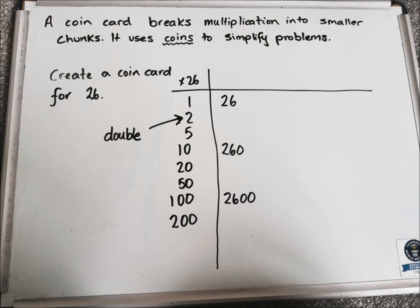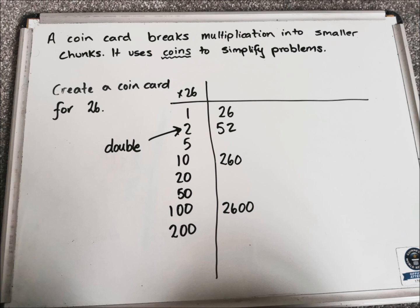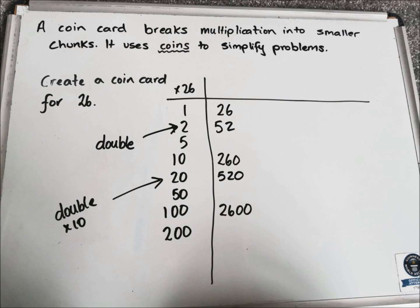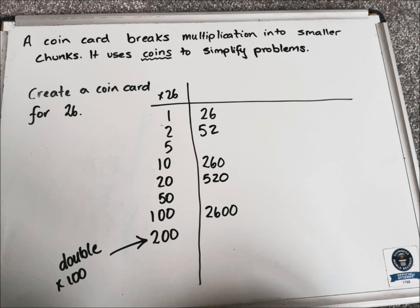We're then going to use our knowledge of doubling to find the answer for 2 times 26, because multiplying by 2 is exactly the same as doubling. So double 26 and we get 52, so we can write the answer in there. To find the answer for 20, we just multiply our answer for 2 by 10, because 2 times 10 is 20, so we get 520. We then multiply the answer for 2 by 100 to get the answer for 200, which is 5,200.